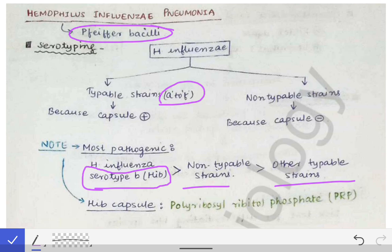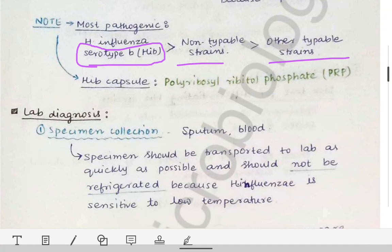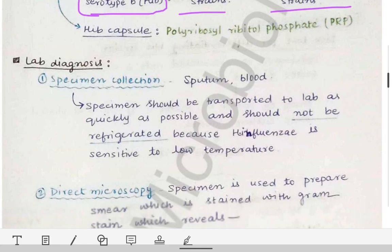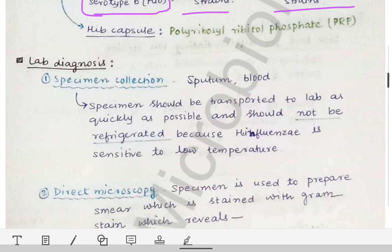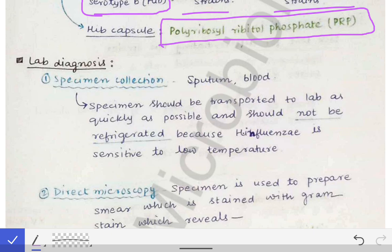One MCQ question may be asked about a peculiar finding in the HIb capsule: what is the capsule of HIb made up of? The capsule of HIb is made up of polyribosyl ribitol phosphate — PRP. Please remember this finding, as it is a common MCQ question.